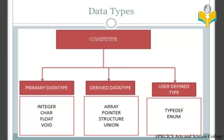In C, the data types include integer types, floating types, character types, and double types. Data types are mainly divided into three types in C programming.